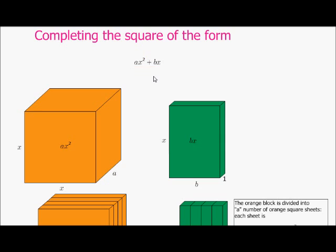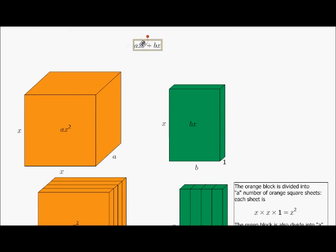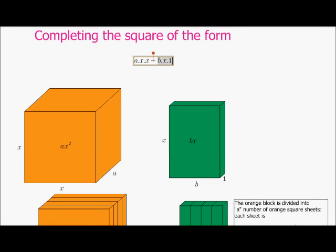First of all, you might ask: what on earth do you mean completing the square? Well, if we look at ax squared, we could maybe imagine it as a times x times x, and b times x times 1. And this can then be considered as length times breadth times height.